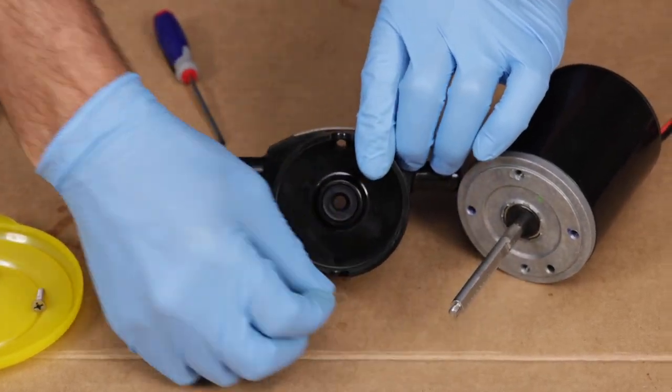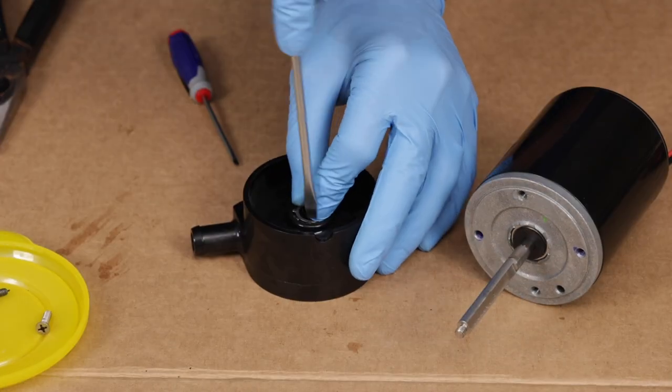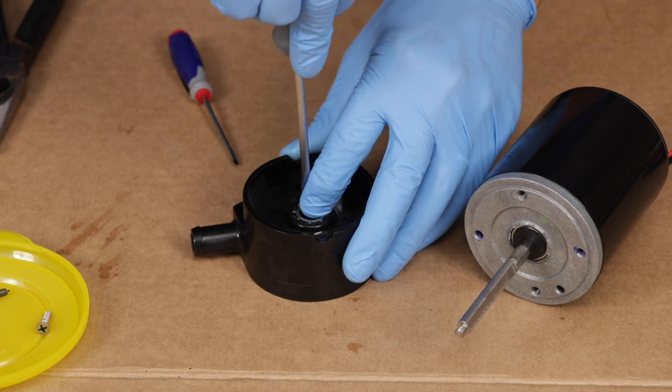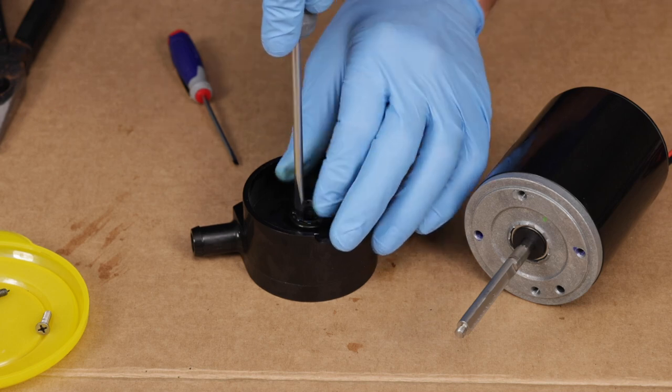Next, install the replacement seal retainer, carefully using the flathead screwdriver as needed to make sure each tab is secured under the small lip of the seal seat. When doing so, you'll feel and hear the tabs as they snap under the lip.